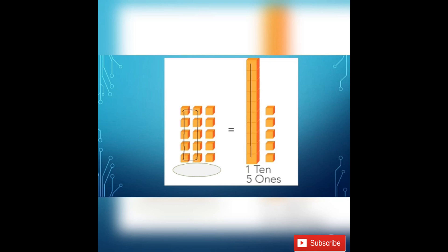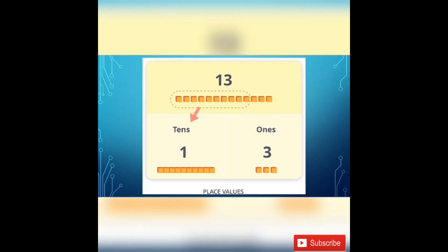How many remaining? 1, 2, 3, 4, 5 — 5 cubes. 1 ten and 5 ones. 1 ten and 5 ones make 15.